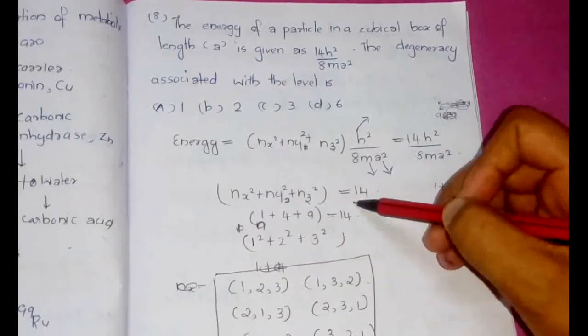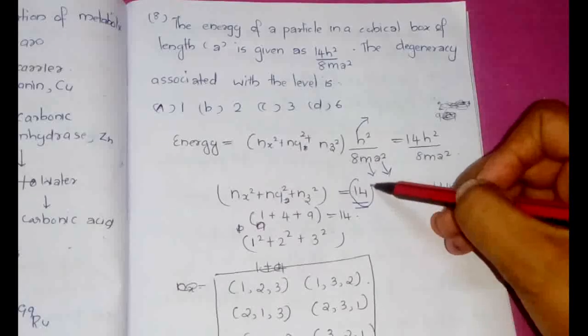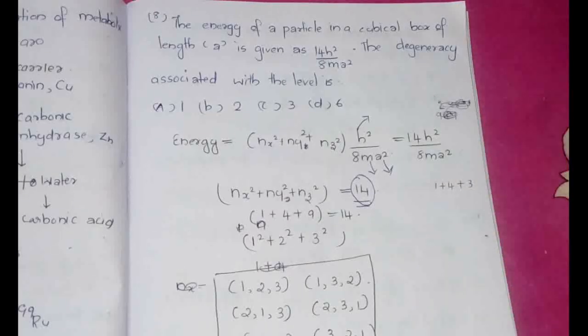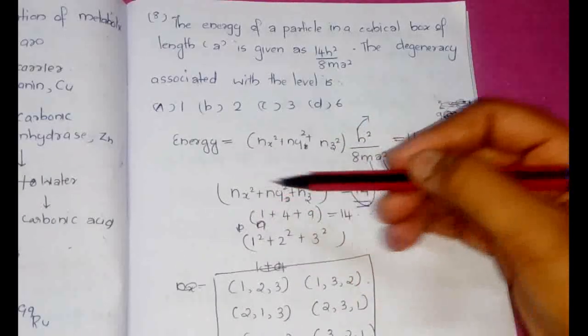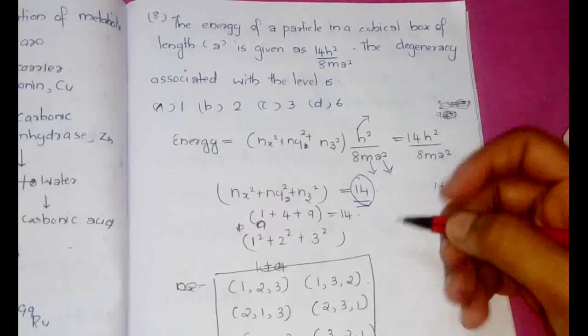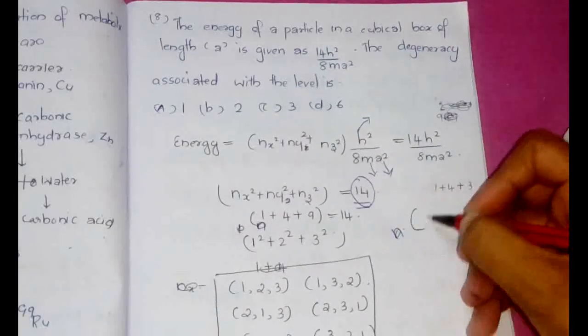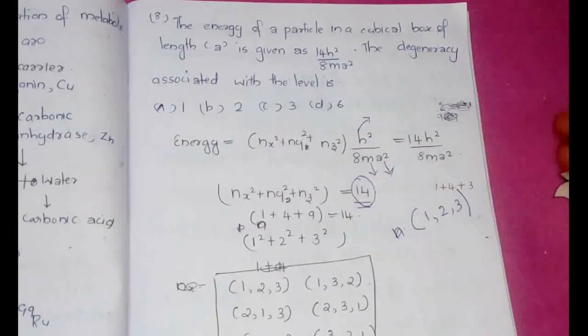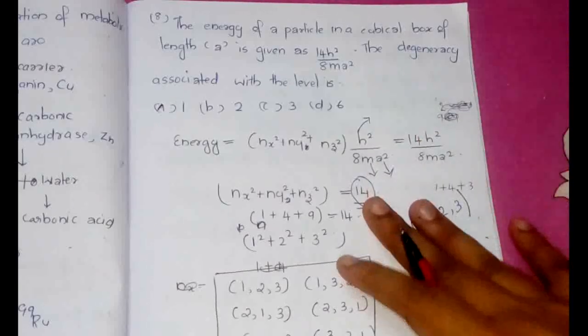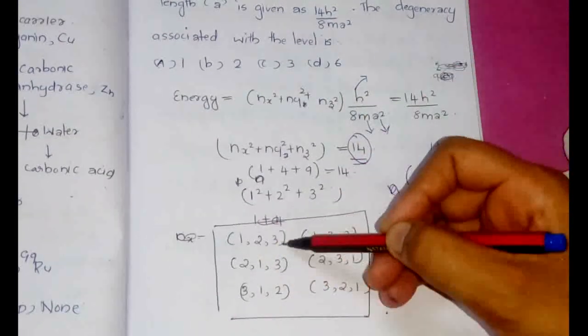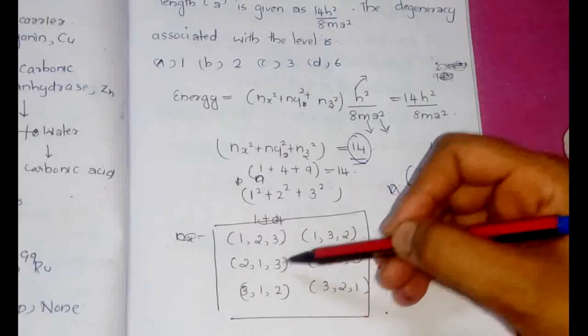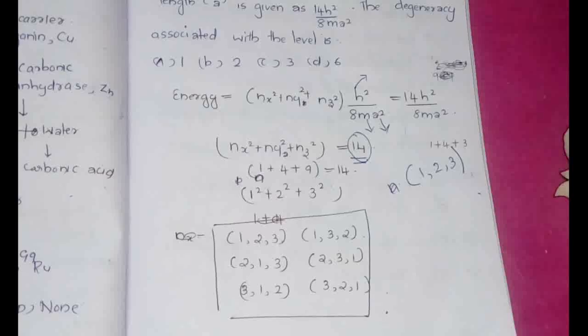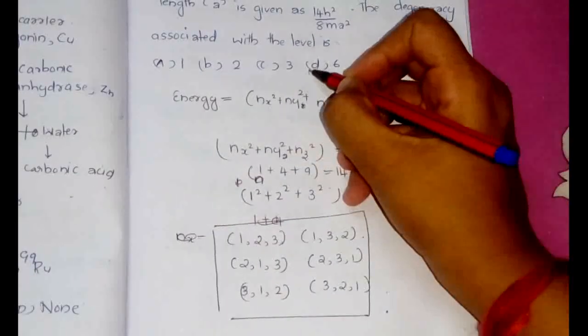Now we need to get the sum of the squares of these quantum numbers as 14. So the only possible value is to get 1 square plus 2 square plus 3 square. So the answer for n or the combination will be 1, 2, and 3. Now we have to arrange this so that we can find the degeneracy associated with this level. So if it is 1, 2, 3 or 1, 3, 2 or 2, 1, 3 or 2, 3, 1 or 3, 1, 2 or 3, 2, 1, in all these cases we get the same energy. So the degeneracy of this particular level is 6.